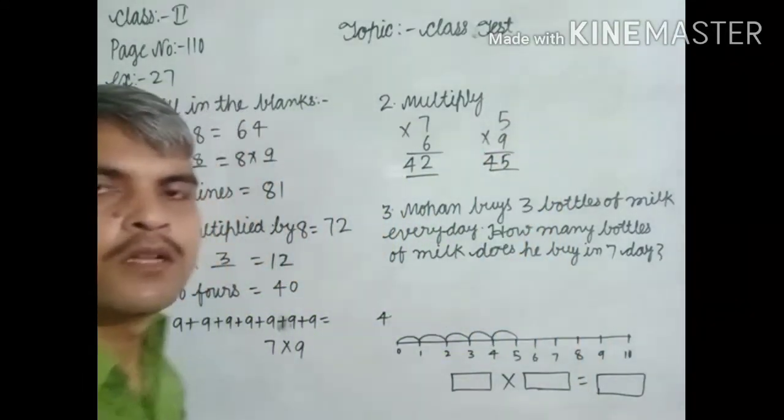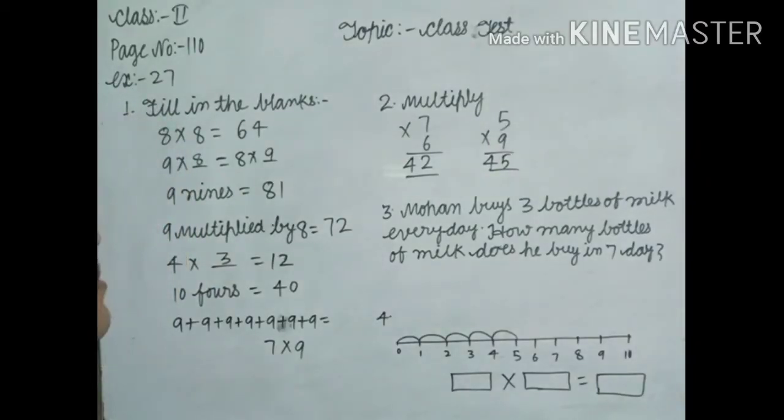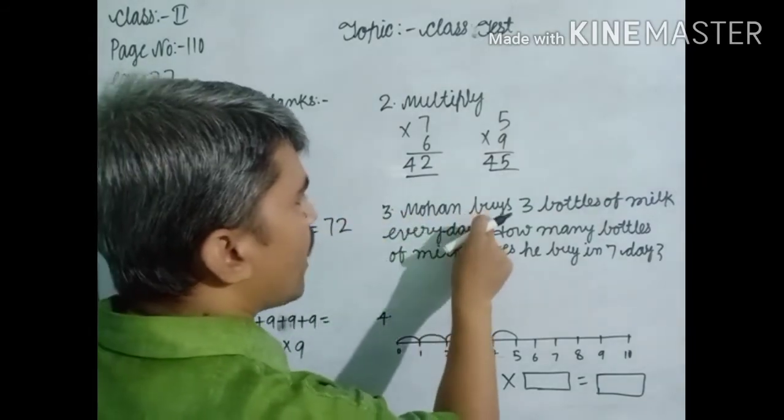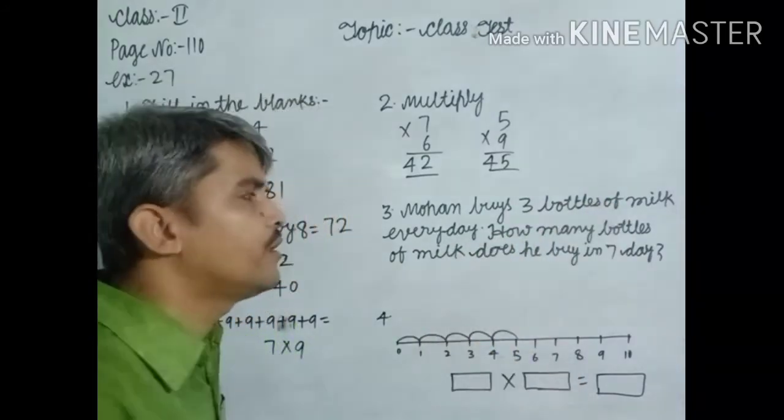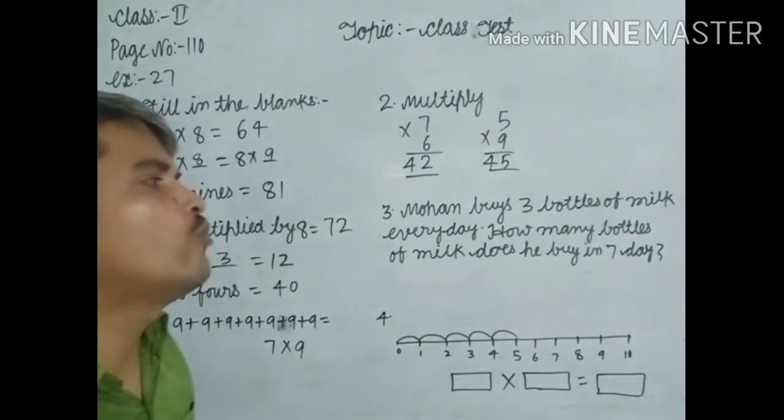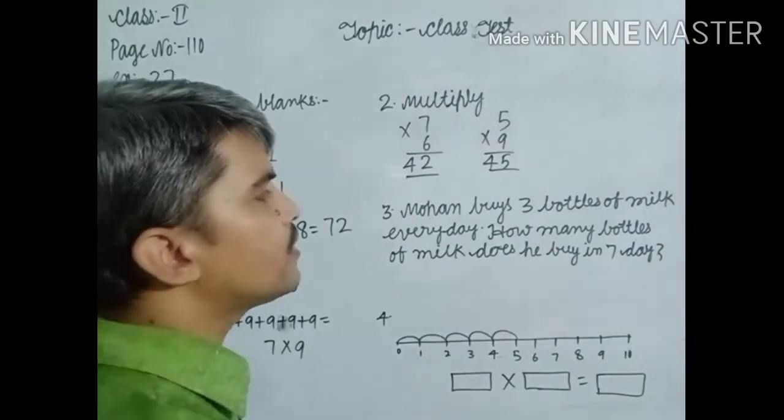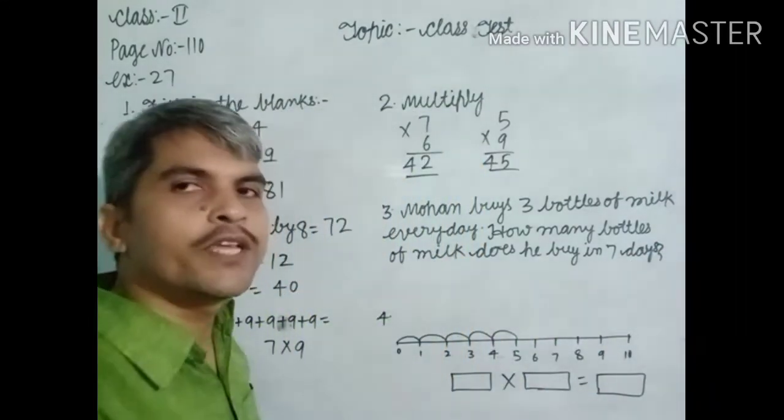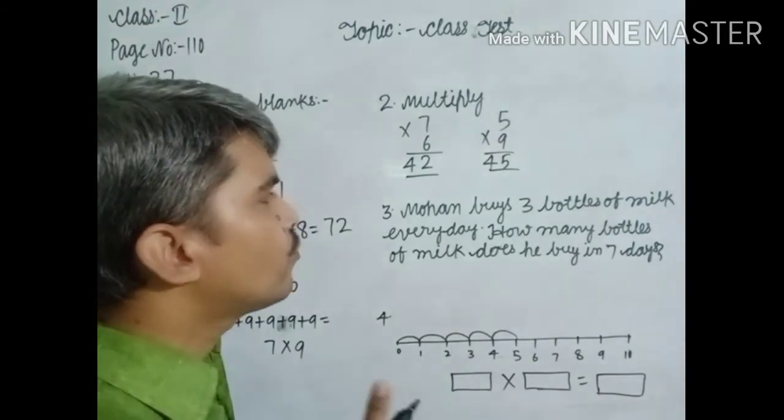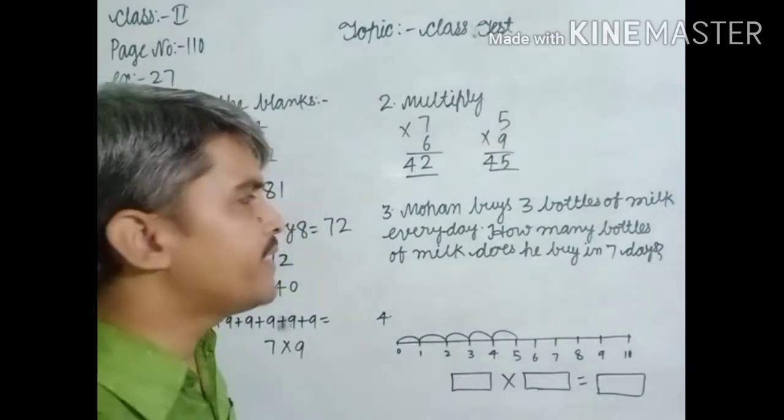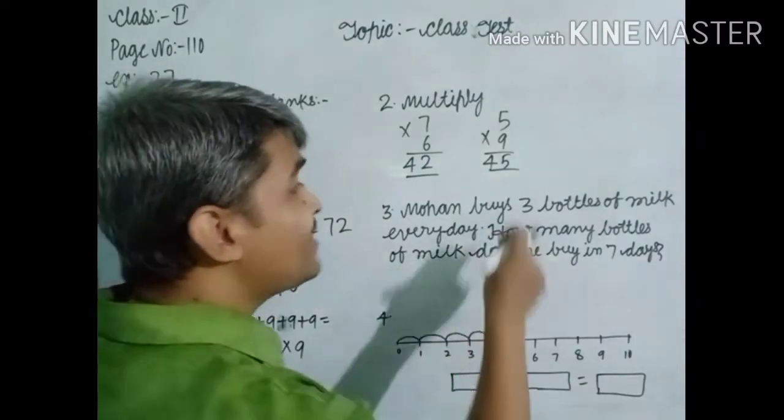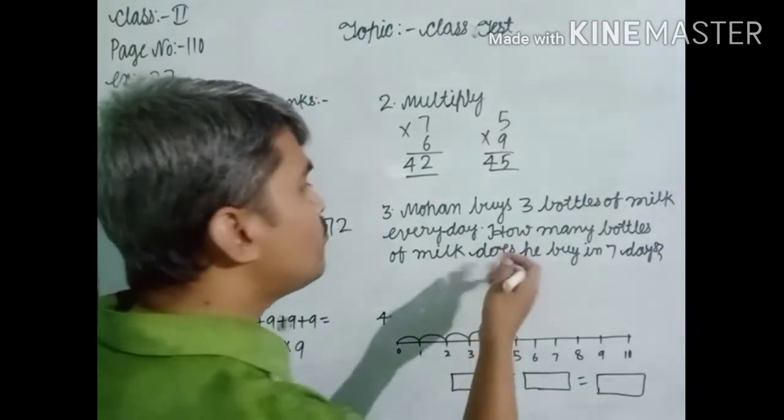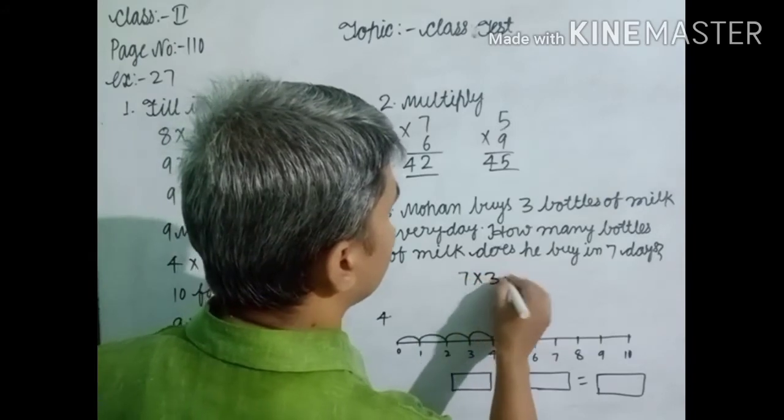Now the word problem: Mohan buys 3 bottles of milk every day. How many bottles of milk does he buy in 7 days? Dear students, every day means each day, one day he purchases 3 bottles. How many bottles does he buy in 7 days? When you add 7 times 3: 3+3+3+3+3+3+3, then you find the answer. But here you multiply: 7×3 equals 21 bottles.